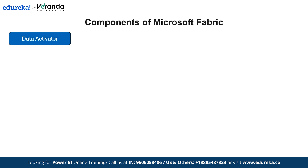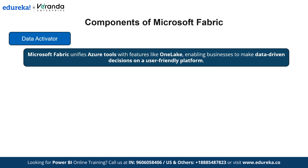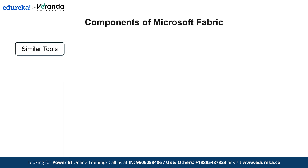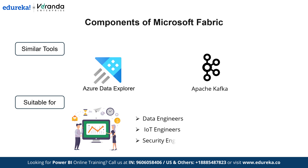The next component is Data Activator. Data Activator in Microsoft Fabric is a no-code tool that automates actions based on dynamic data patterns, allowing business users to monitor data and trigger actions like sending notifications or running scripts. Microsoft Fabric combines several Azure tools offering core features like One Lake. This set of tools is similar to Azure Data Explorer but with the addition of Event Streams and Apache Kafka, and is typically used by data engineers, IoT engineers, and security engineers for real-time event logging and security tracking.